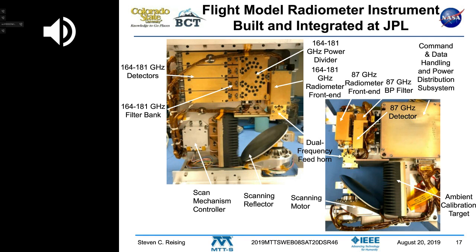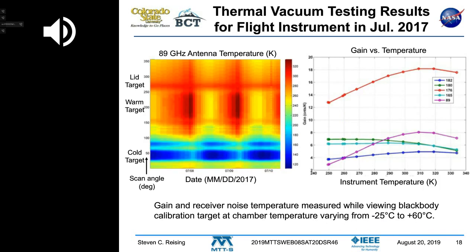The analog-to-digital converters are in the command data handling subsystem. At the top left of the right photo we see the W-band front end — a different waveguide output from the feed horn. In the lower part we see the ambient calibration target used for calibration.